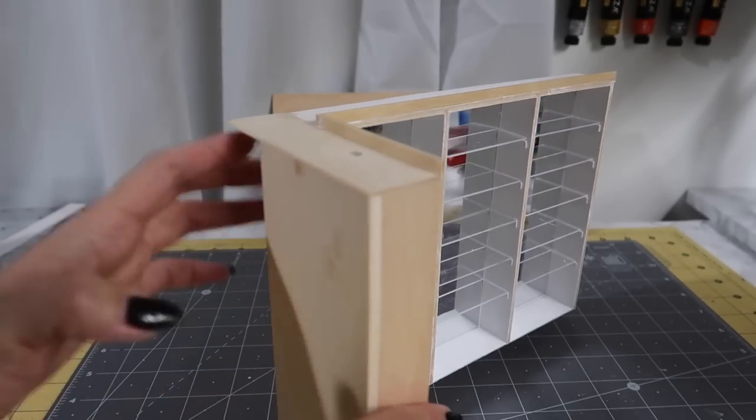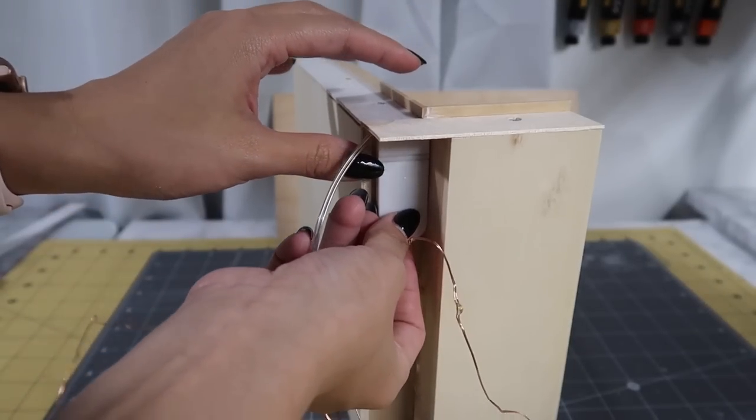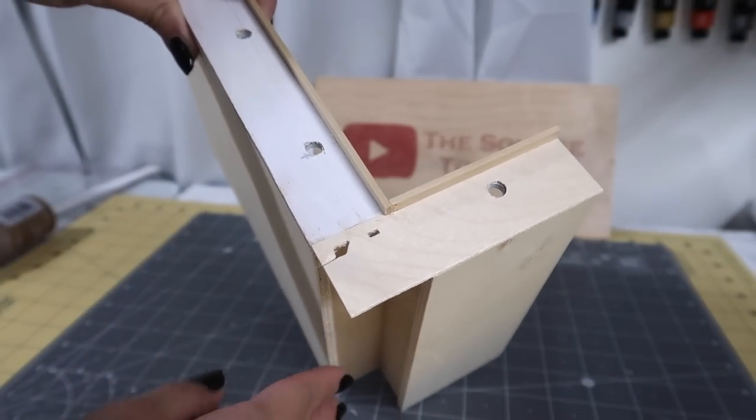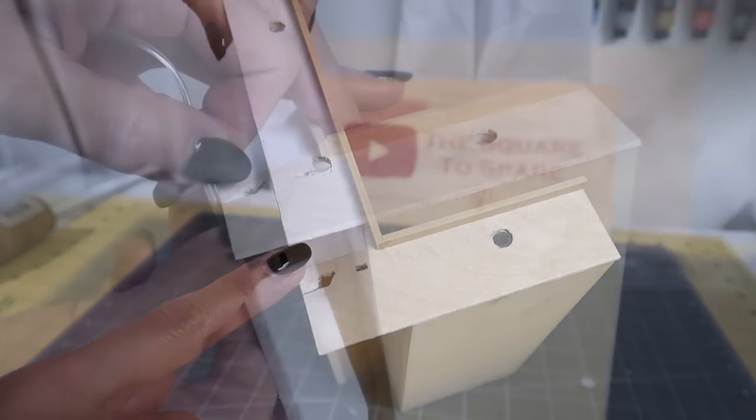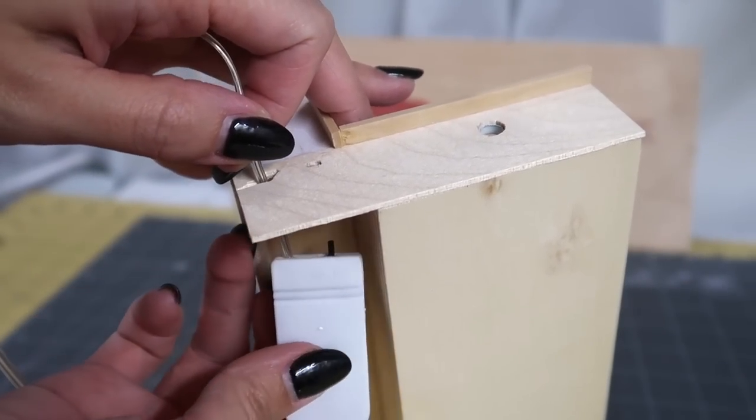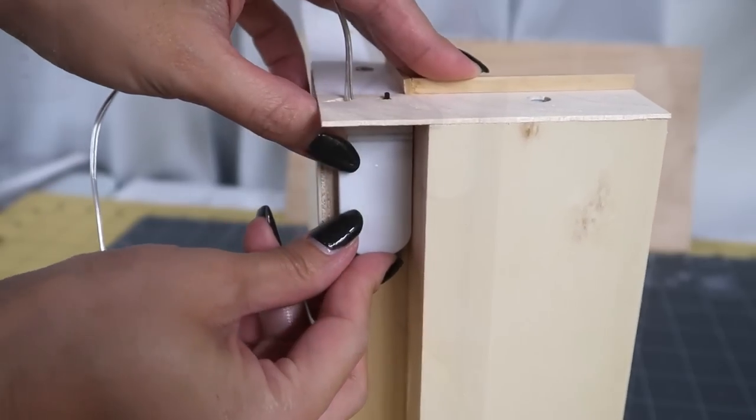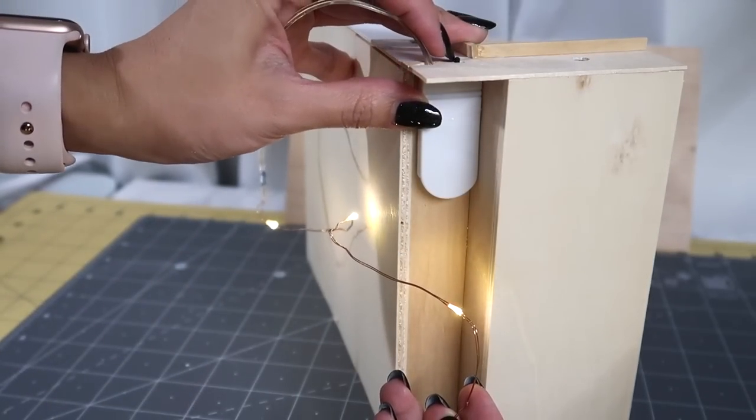For the lighting itself, I'm using the same fairy string lights that I used in my big dollhouse video. They're dummy proof and the easiest way to add several lights to your dollhouse at once. In order to easily access the on off switch but still hide the battery pack, I'll be gluing the pack here. Cut two holes, one for the switch and one for the wire. This will allow you to turn the lights on and off without taking out the whole contraption.